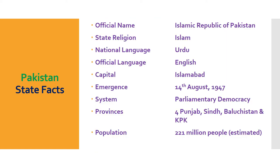Here are some facts about Pakistan. Official name: Islamic Republic of Pakistan. State religion: Islam. National language: Urdu. Official language: English. Capital: Islamabad. Emergence: 14th of August, 1947. Political system: parliamentary democracy. Provinces: four — Punjab, Sindh, Balochistan, and KPK. Population: 221 million people, estimated.